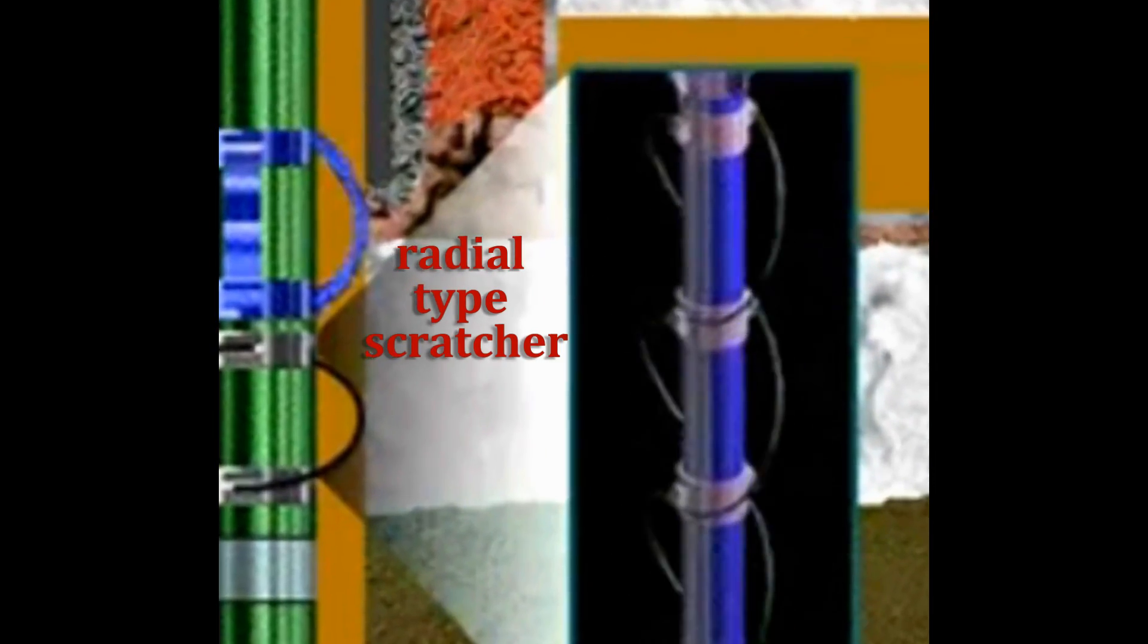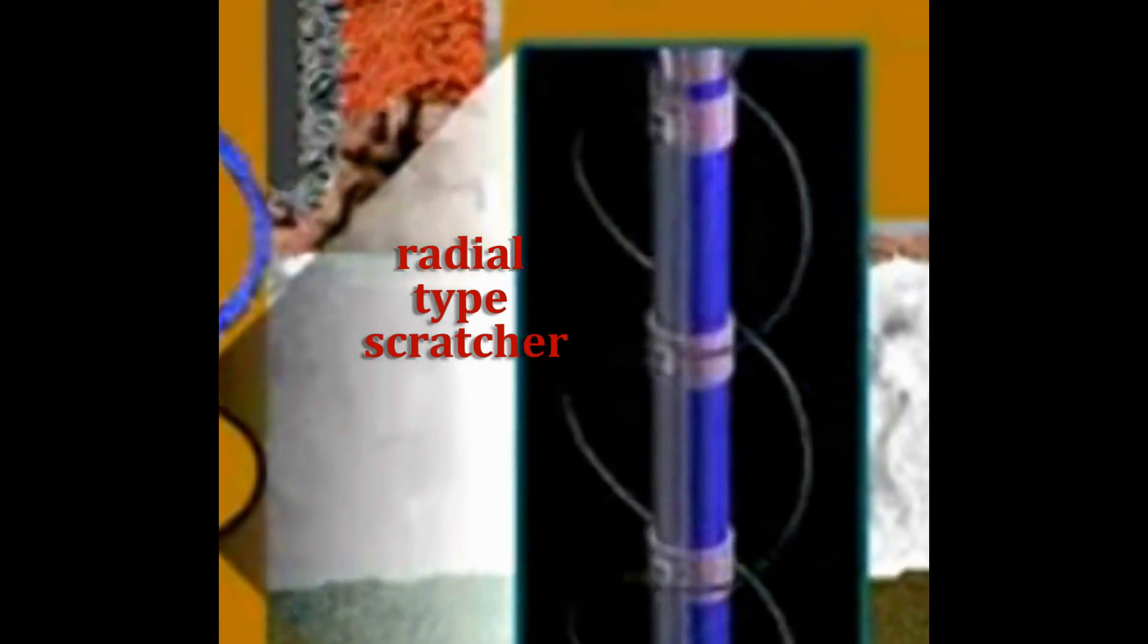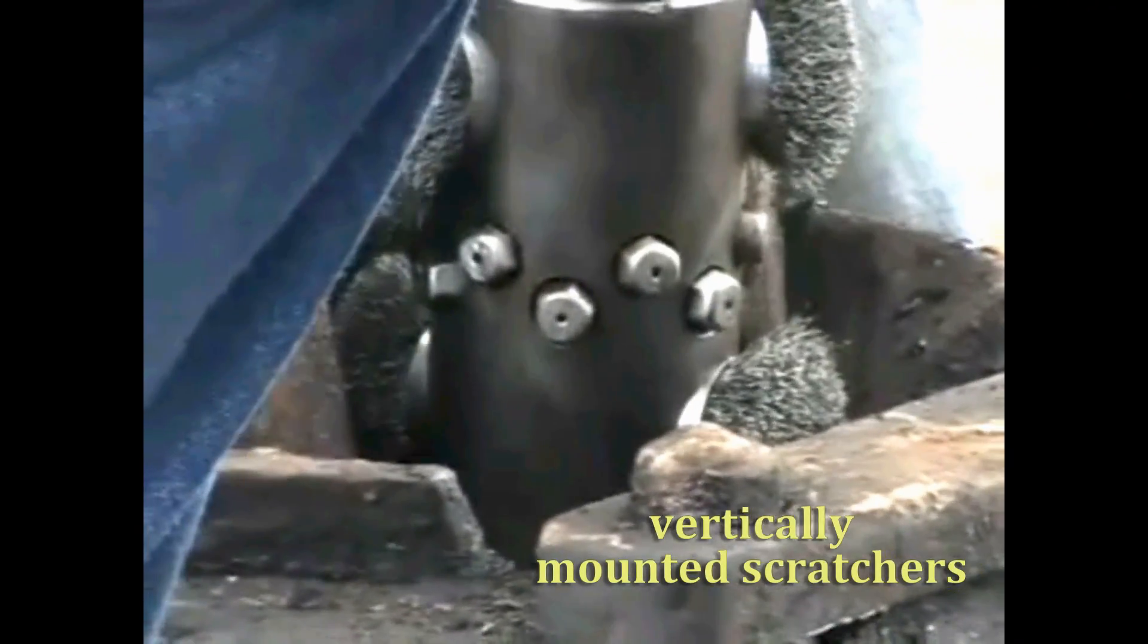Radial type scratchers require that the pipe be reciprocated or moved in an up and down motion before and during cementing. Vertically mounted scratchers require the pipe to be rotated.